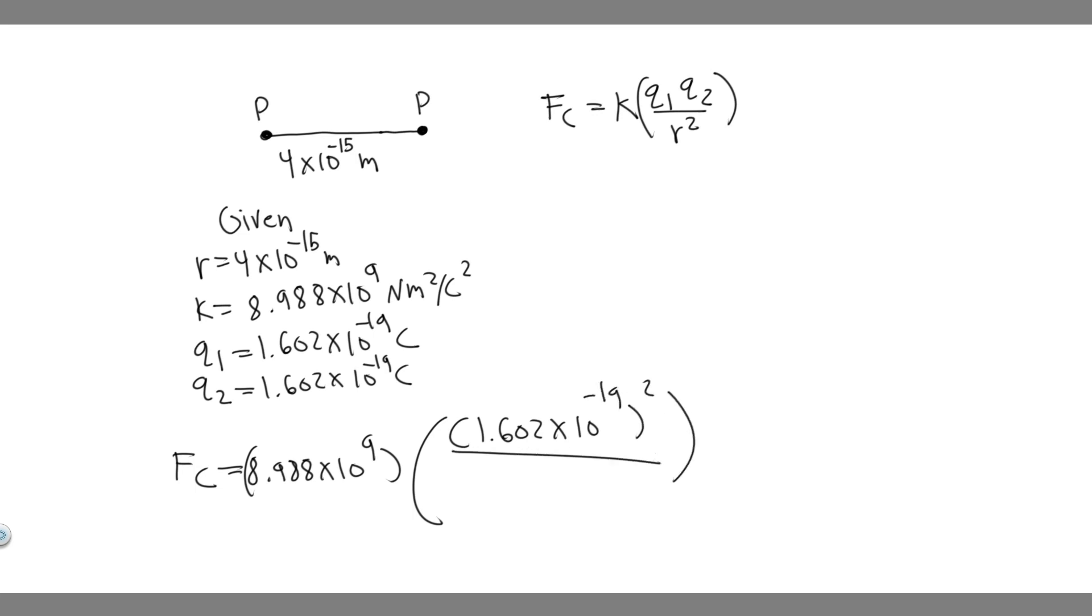And then we divide by the radius squared. So the radius is 4 times 10 to the minus 15 squared. So you want to do this 8.988 times 10 to the 9, multiplied by 1.602 times 10 to the minus 19 squared, divided by 4 times 10 to the minus 15 squared.